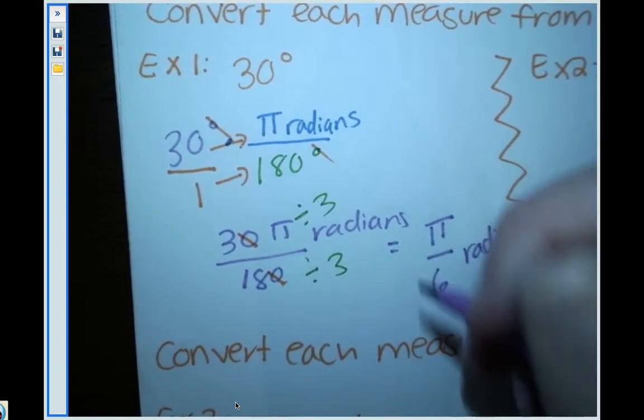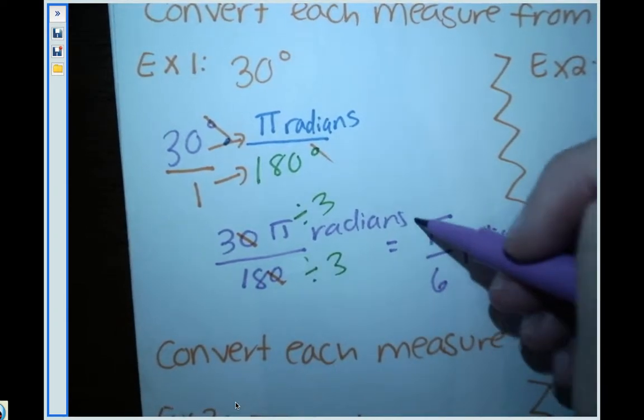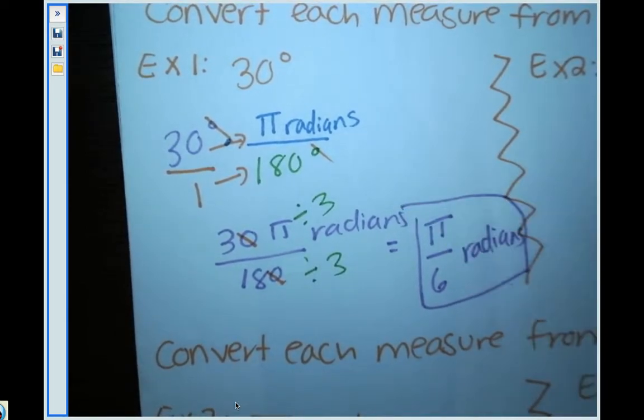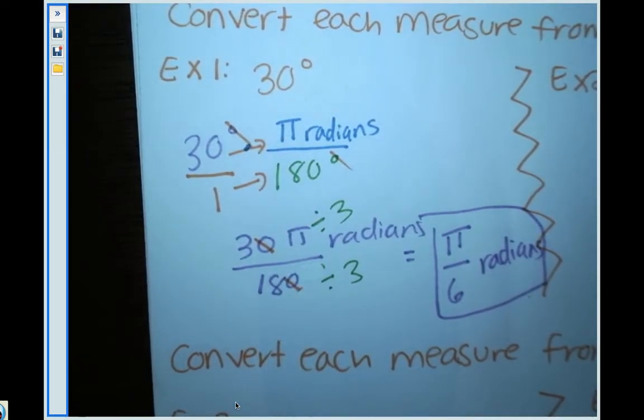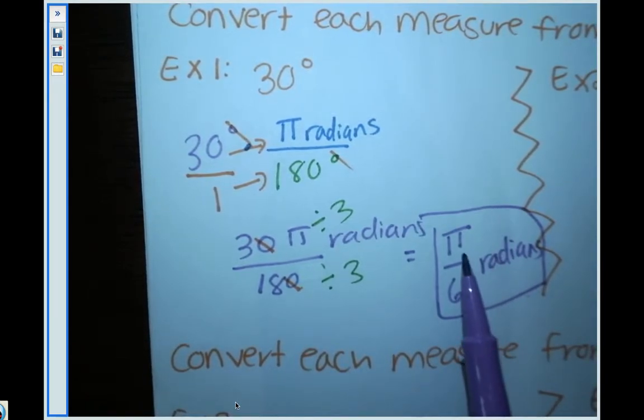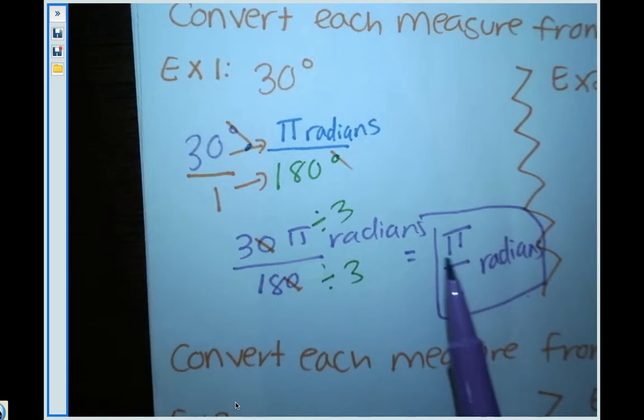Typically, radians will have a π in the unit because we have to multiply by π to convert to radians. So I'm not saying you can't have π in order to be radians, but a lot of times when you convert to radians, your angle will have a π in it.